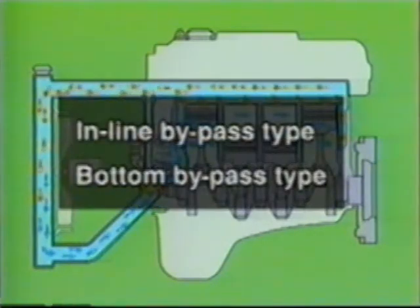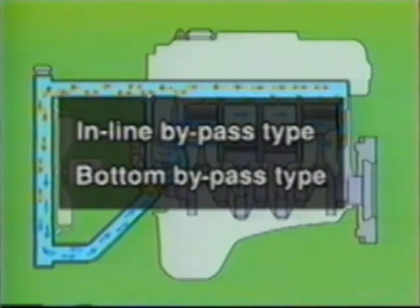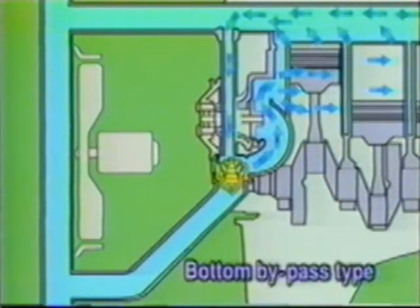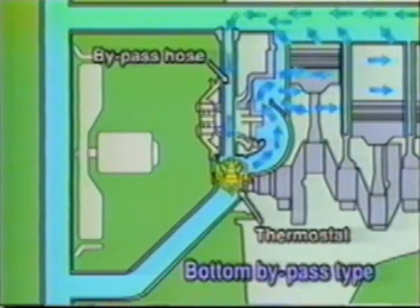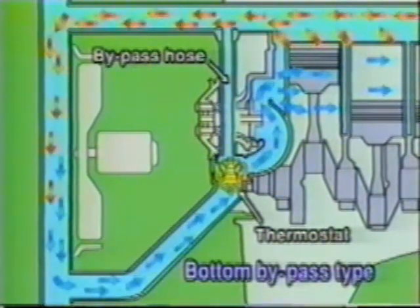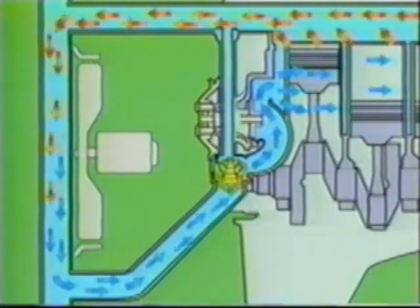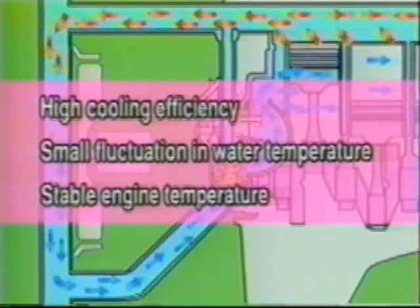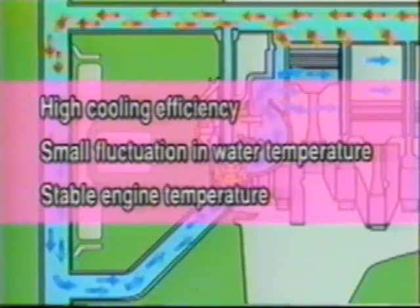There are two types of cooling systems in terms of a coolant bypass circuit: the inline bypass type, in which the bypass is open at all times, and the bottom bypass type. Most engines use the bottom bypass type. In the bottom bypass type, the thermostat is installed on the coolant inlet side and has a bypass valve. When the thermostat opens, the valve closes the bypass. Compared with the inline bypass type, the bottom bypass type has greater cooling efficiency and less fluctuation in coolant temperature, and therefore achieves more stable engine temperature.